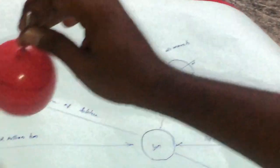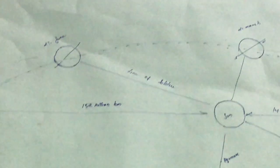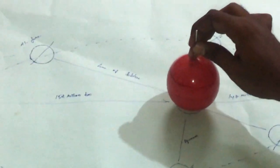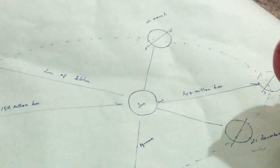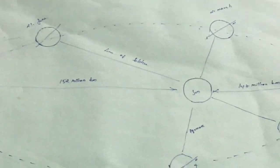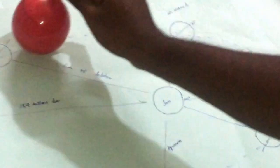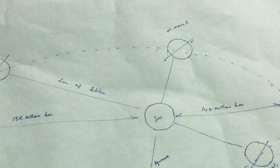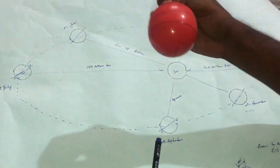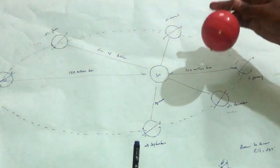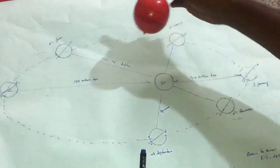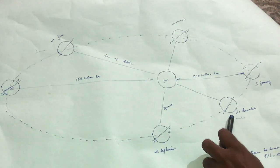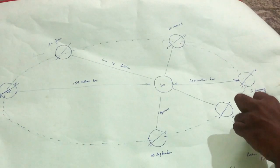In this picture, we can see the Earth's orbital positions. There is a drawing showing key dates: 21st of March, 21st of June, 3rd of July, 23rd of September, 21st of December, and 3rd of January.